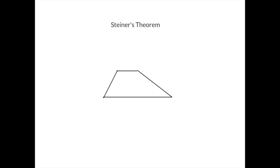Now to see what Steiner's theorem claims, we first need to draw some lines. Steiner's theorem says that if we draw this line here, then these two points — the point here and the point here — are the midpoints of the parallel segments. So this equals this and this equals this.